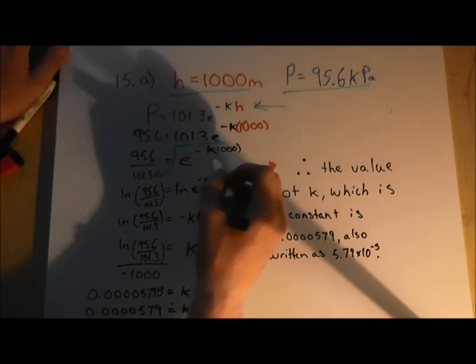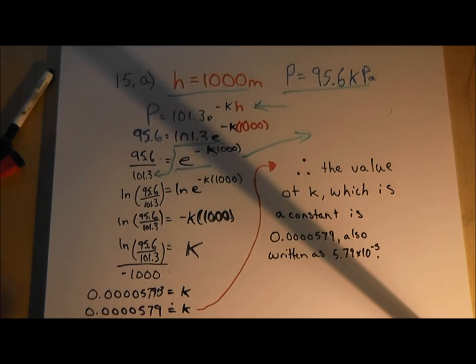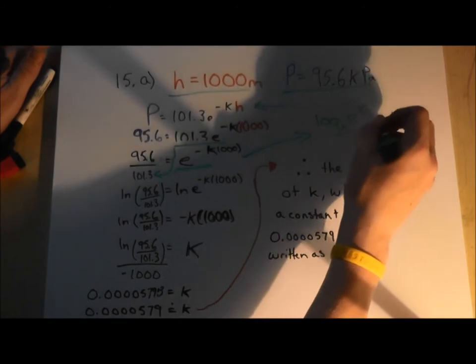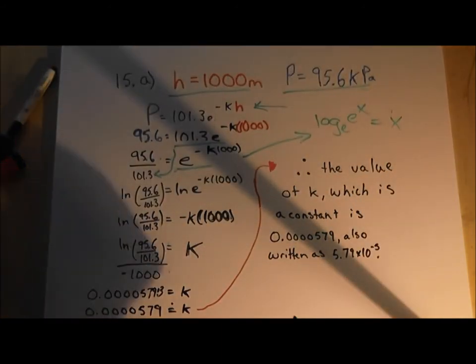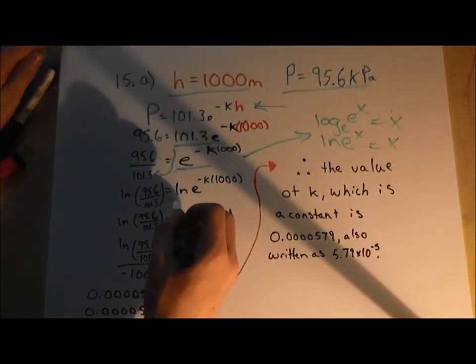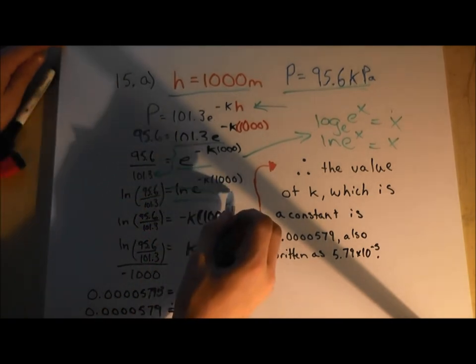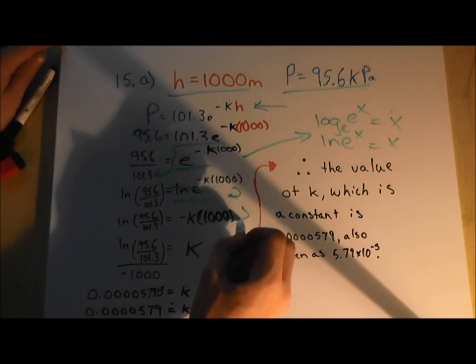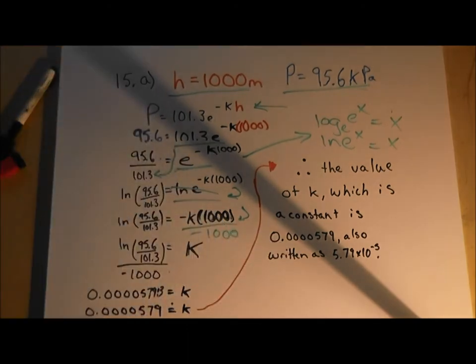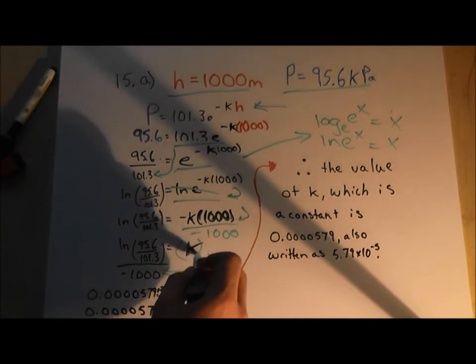Bring it over to the other side. Now this looks very familiar to something that I showed you earlier on in this video. We know now that this is the exact same. So we apply this rule. And this gets rid of Euler's constant for us and brings down k, as seen here. Now we can go ahead, divide negative 1,000 by this side and this side to bring it over. And we have now isolated for k.